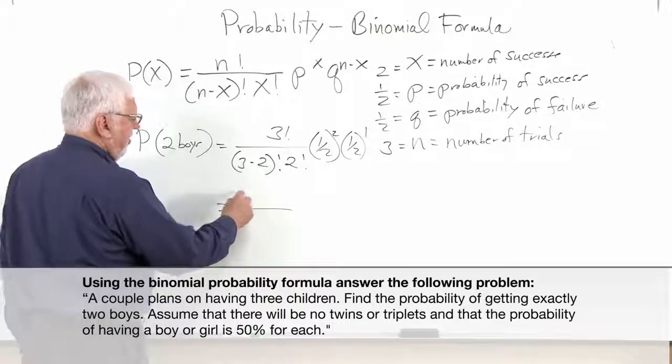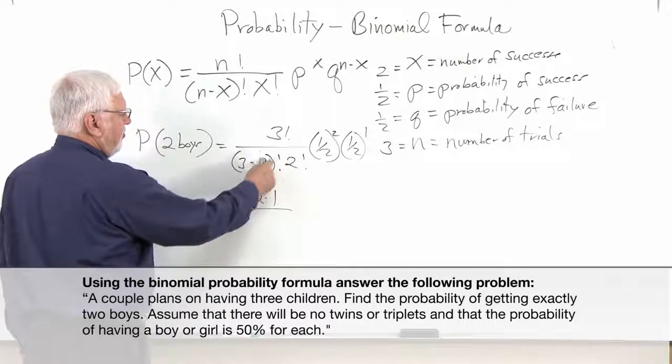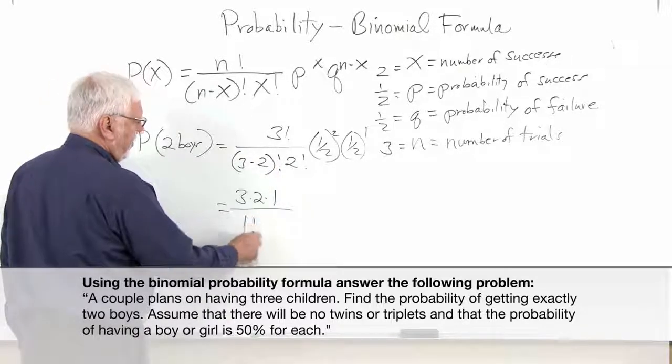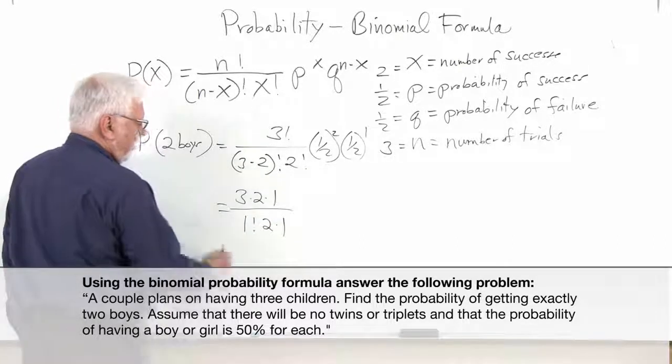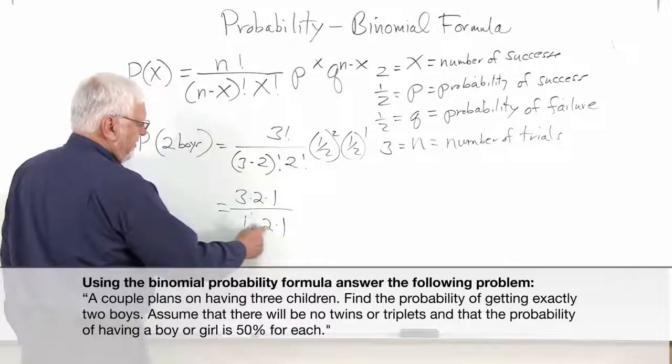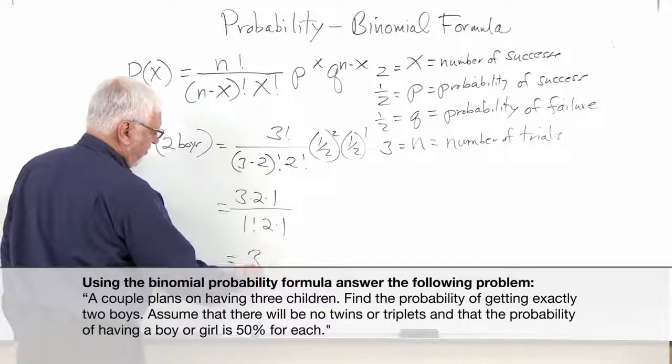So three factorial really means three times two times one. Three minus two or one factorial. And then this is two times one. Now one factorial is one, so if we do a little reducing and canceling here, we end up with three.